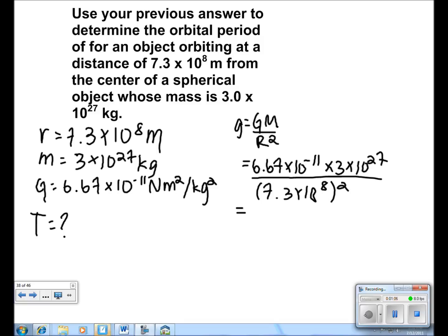So we get a surface gravity of 0.3755 meters per second squared.